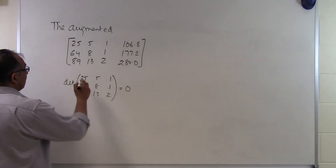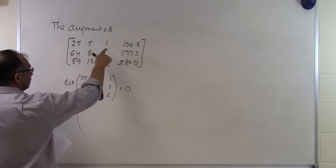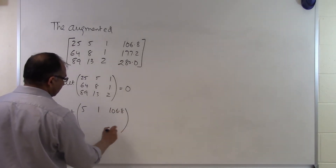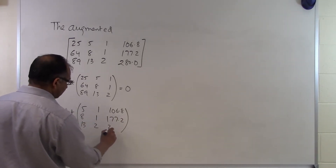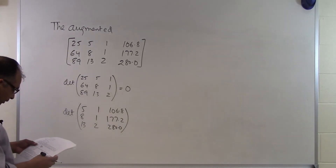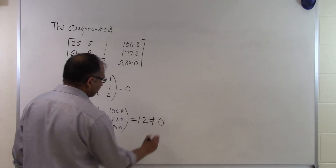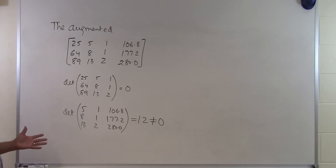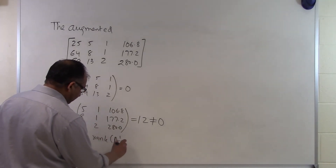Let me take another submatrix — getting rid of the first column. The determinant of [5, 1, 106.8; 8, 1, 177.2; 13, 2, 280.0] is turning out to be 12, which is not equal to 0. Since I found a 3x3 submatrix with determinant not equal to 0, the rank of the augmented matrix is 3.